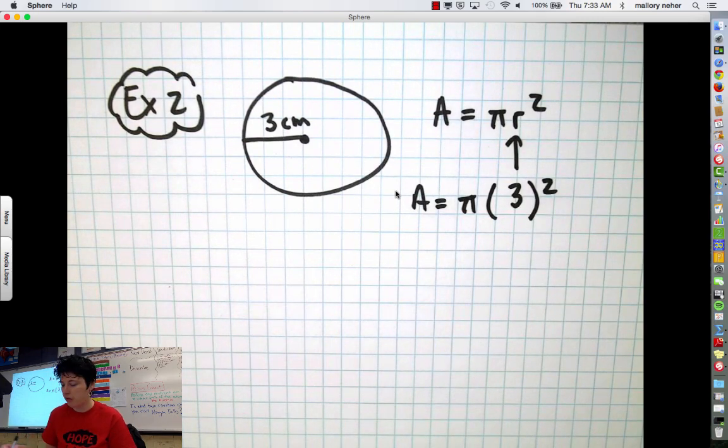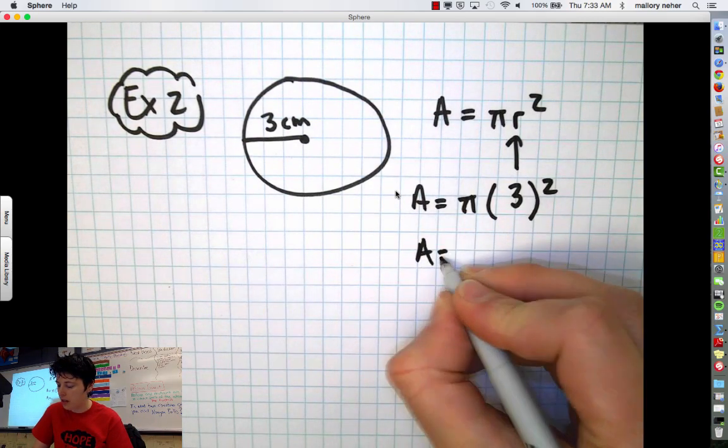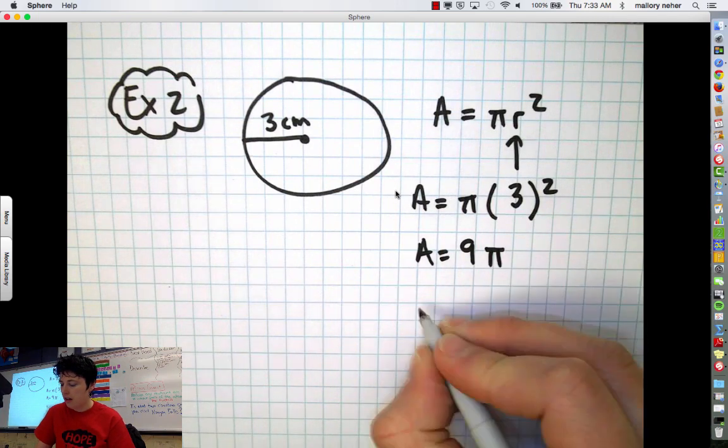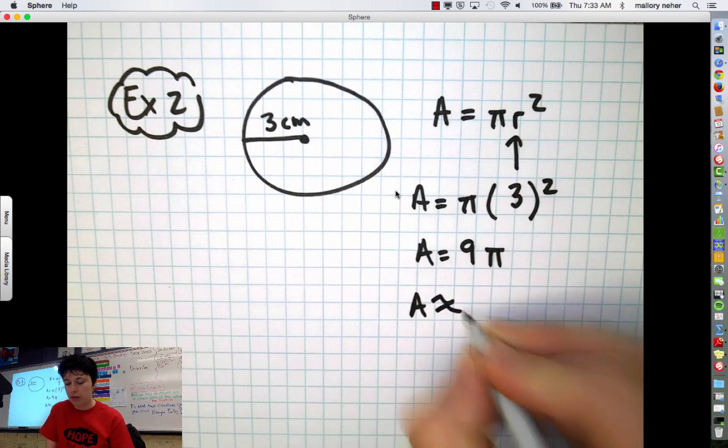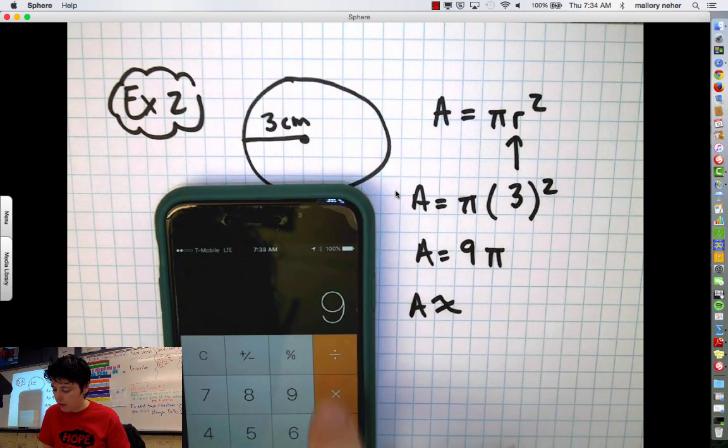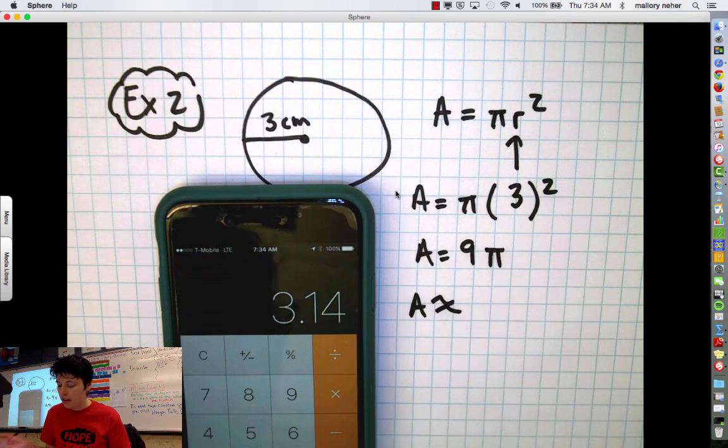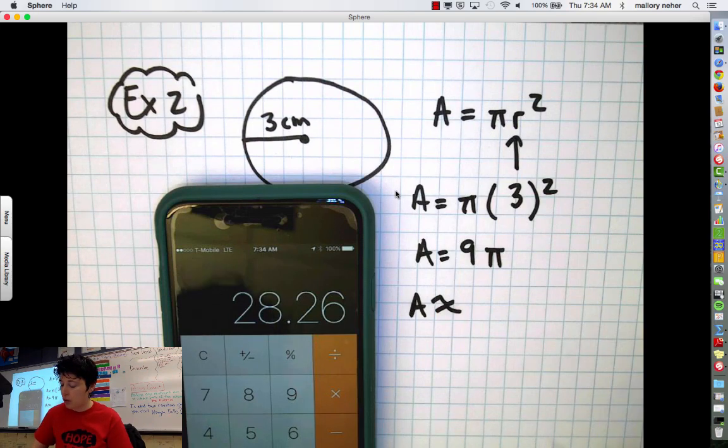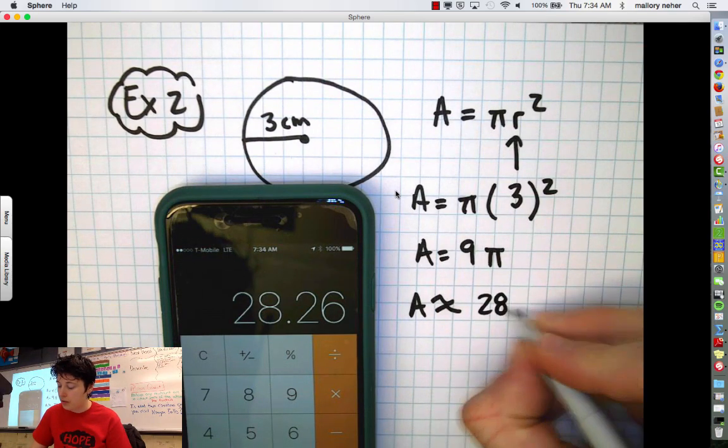Three squared, three times three is nine. So area equals nine pi. Area is going to be about equal to nine times 3.14. Twenty eight point two six. So about twenty eight point two six.